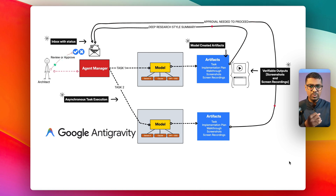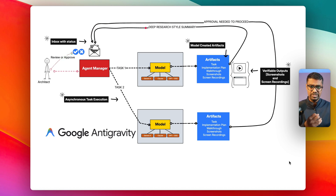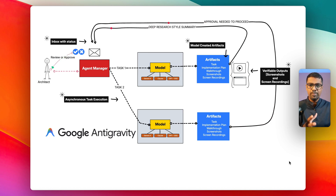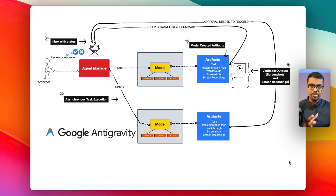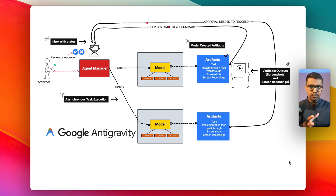If you've configured your agent to require manual input at every step — for example, requiring Agent Manager approval every time it executes a CLI command — when you come back to the inbox it will say it needs you to allow it to run a particular command. That's Agent Manager of Antigravity in a nutshell. There are more features, but I'll walk through those when we start building the demo.